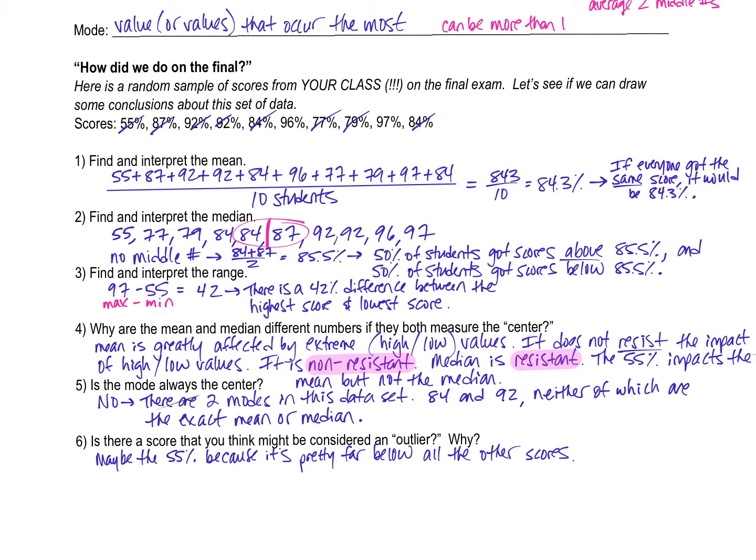Okay, the median, the annoying part about the median is that it is in your best interest to probably line these numbers up in increasing order with my 55, my lowest score all the way on the left, and my highest score all the way on the right. That's the annoying part. I would not ask you to do that for a data set of like 25 or a million numbers. I'm only going to ask you to do it for maybe 10 numbers.